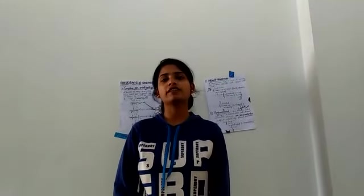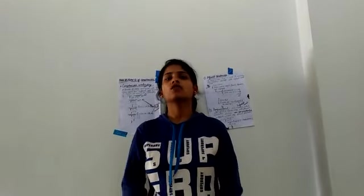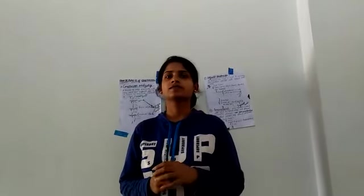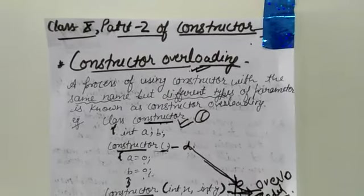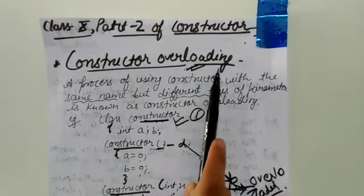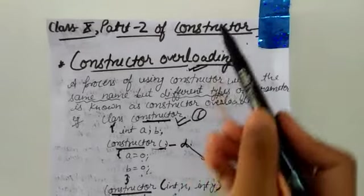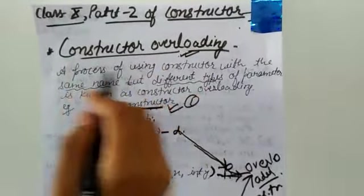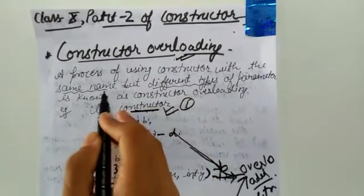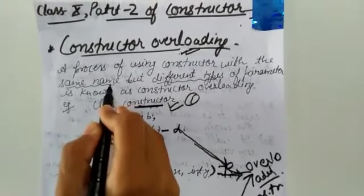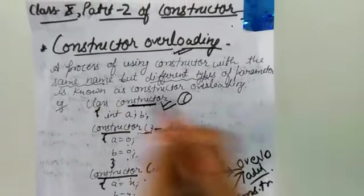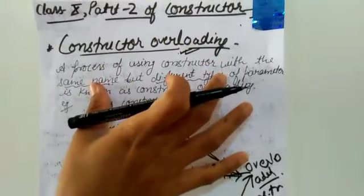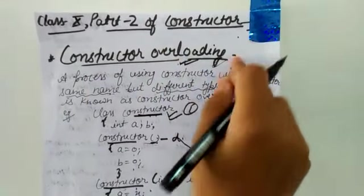Class 10. In the previous video we have discussed about the constructor — what is a constructor? Now we are going to talk about constructor overloading. Overloading means when you are using a number of constructors together in a particular program. It is a process of using constructors with the same name — the constructor name should be the same as the class name — but with different types of parameters. That is called constructor overloading.